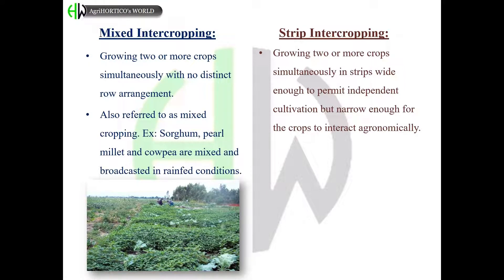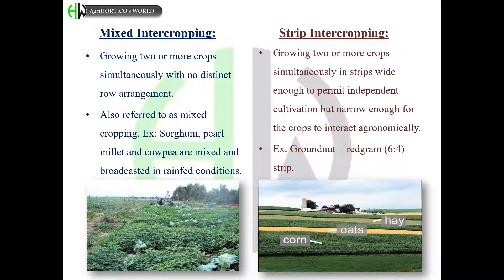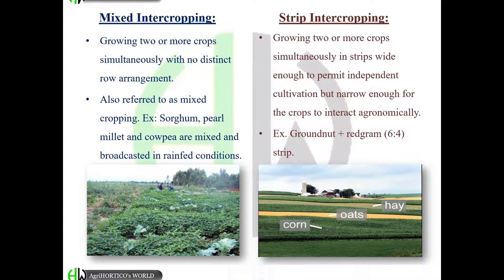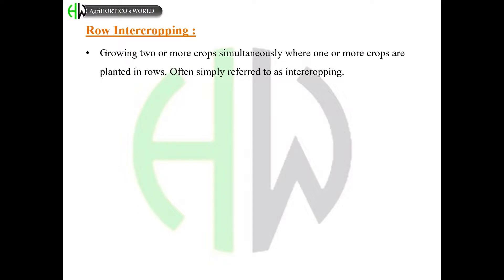In strip intercropping, two or more crops are grown simultaneously in strips wide enough to permit independent cultivation but narrow enough for the crops to interact agronomically. For example, groundnut and red gram are cropped at a ratio of 6:4 in a strip.